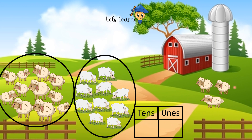And how many sheep are left alone? 1, 2, 3. So 3 will go in ones. And how many groups of 10 sheep are there? 1, 2. So 2 will go in tens. So how many sheep are there altogether? 23. There are 23 sheep.